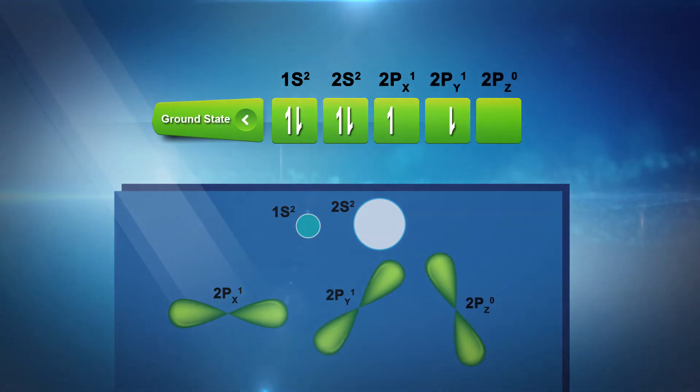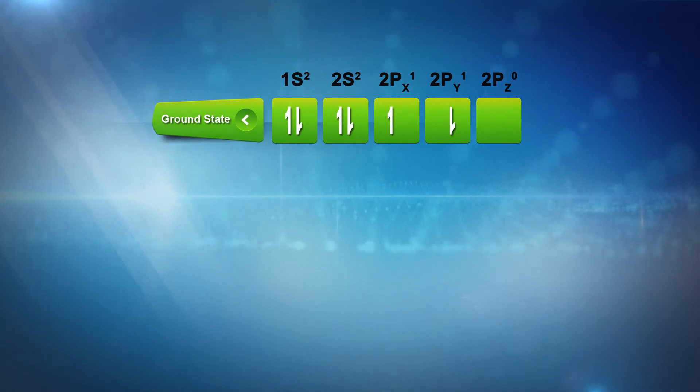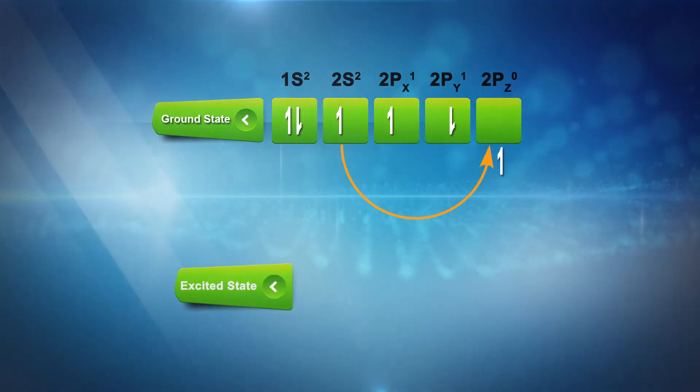When this atom is excited, an electron is removed from 2s orbital and moves to 2pz orbital. The electronic configuration in excited state will be 1s² 2s¹ 2px¹ 2py¹ and 2pz¹.